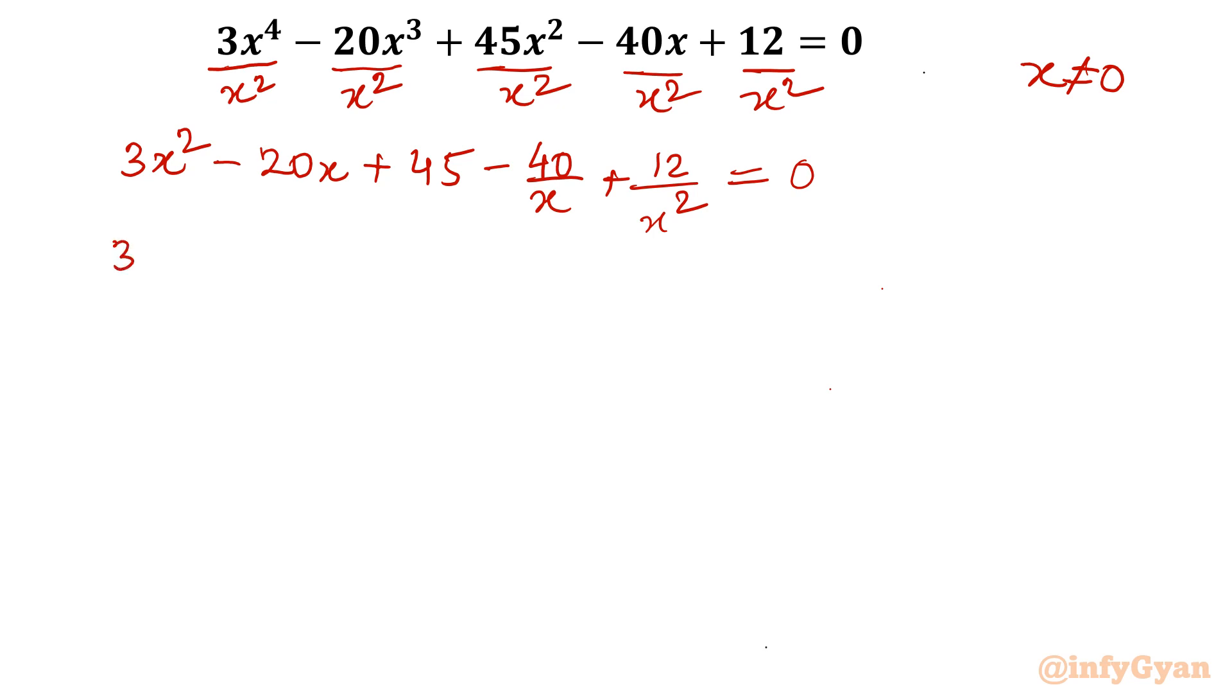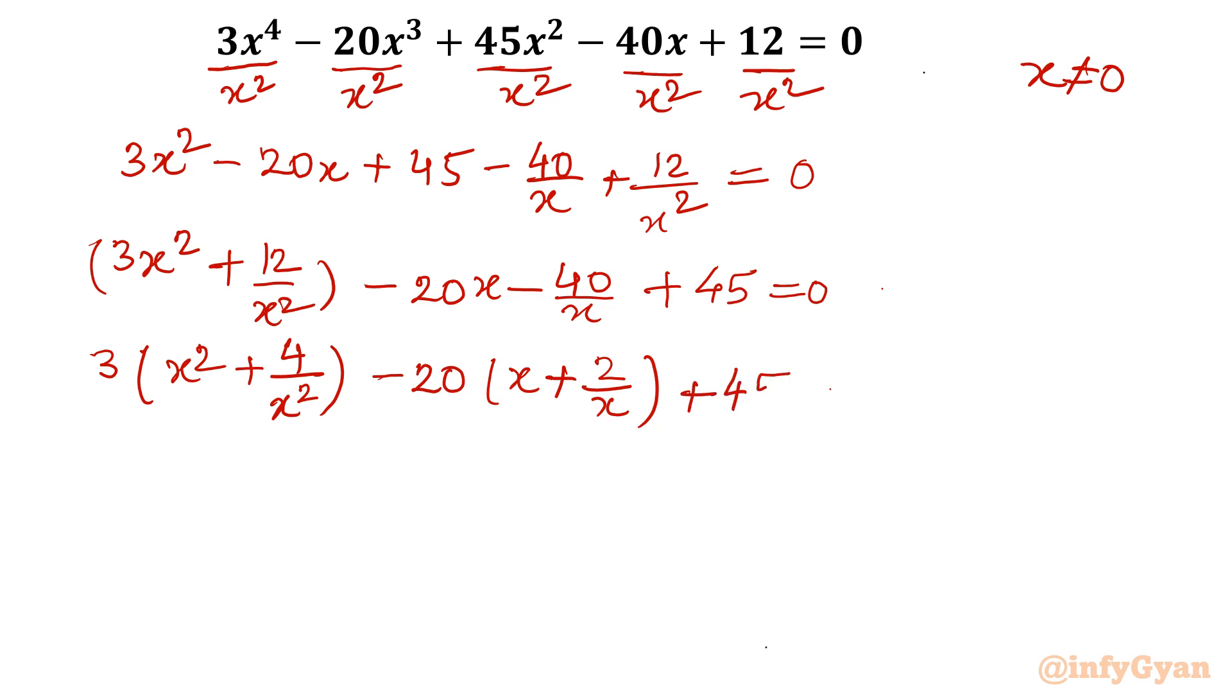Now I will write 3x square and last term 12 over x square in one bracket. Then I will write minus 20x minus 40 over x plus 45 equal to 0. Now I can see I will take 3 common out. So it will be left with inside the bracket x square plus 4 over x square. Here I will take minus 20x plus 40 over x plus 45 equal to 0.